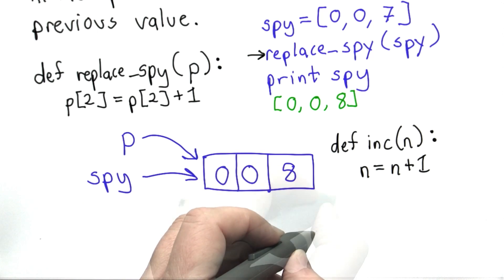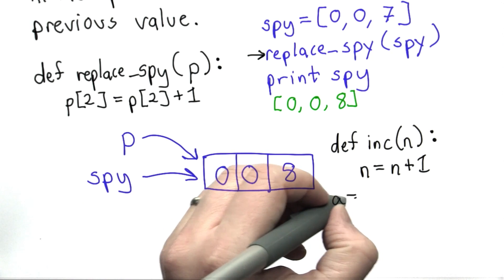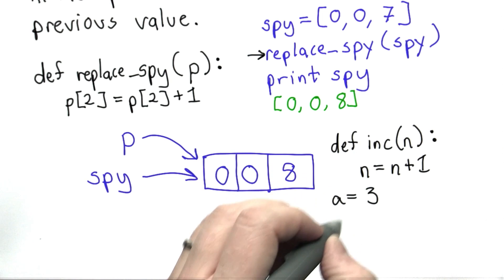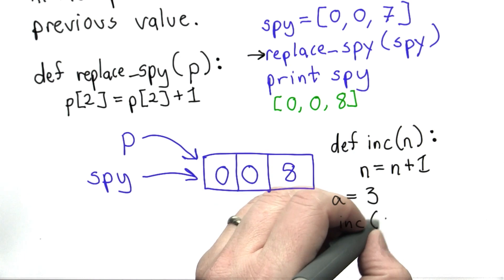So suppose we had code like this. We'll introduce a variable a, give it the value 3, and we'll call inc on a.